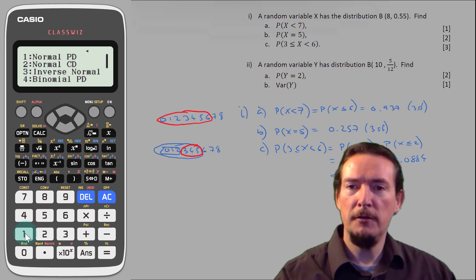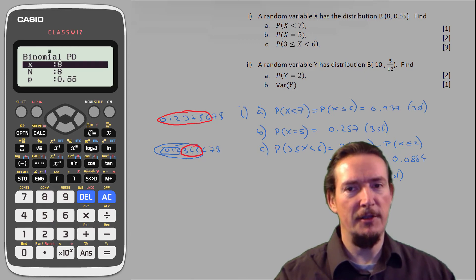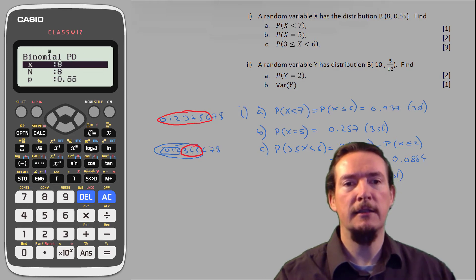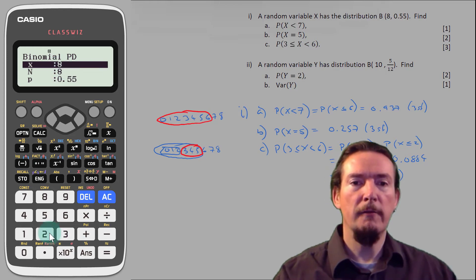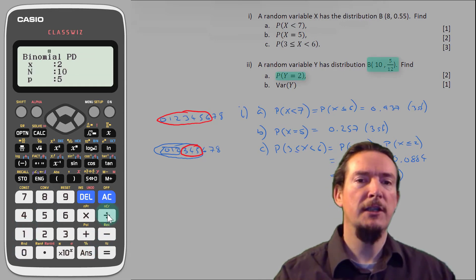Pressing option, 1, 4, and then this time 2 for variable takes us directly to the parameter input screen and there is now a space for the additional value of x, or in this case y. The value of y I'm looking for is 2, so we enter it here, n is 10 and p is 5 twelfths, so I'll enter 5 divided by 12.